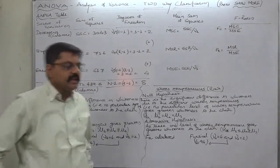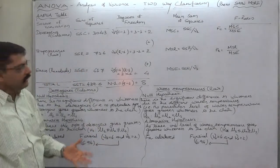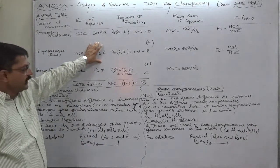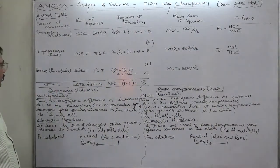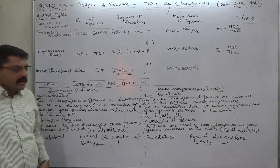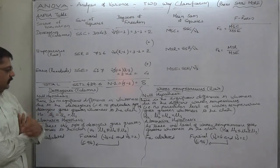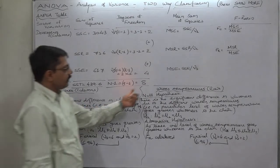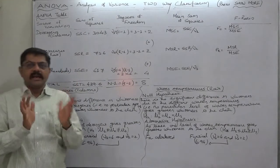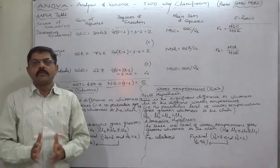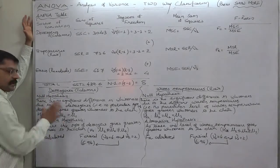The main thing in this part two of the solution is testing of hypothesis and completing the ANOVA table. Before calculating, let's focus on hypothesis in case of two-way classification. We have two sets of hypotheses: one for columns, which is detergents, and another for rows, which is water temperatures. So we are actually solving two problems of hypothesis testing simultaneously.